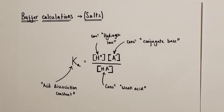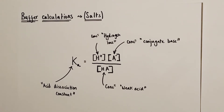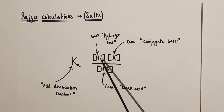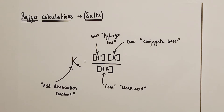Since these buffer solutions are produced using a weak acid, we can manipulate the Ka expression for weak acid dissociation in order to calculate the pH of a buffer solution. Ka stands for the acid dissociation constant, and it's equivalent to the hydrogen ion concentration and the conjugate base concentration formed by the dissociation of the weak acid, divided by the concentration of the weak acid itself.